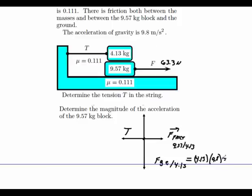And that's going to be nothing more than 4.13 times 9.8. So we take 4.13 times 9.8. It gives me a value of 40.474.